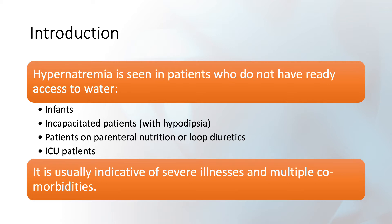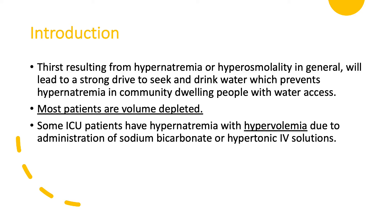Hypernatremia means that the person is probably incapacitated, that their thirst mechanism is not intact, that they cannot get up and drink. Thirst resulting from hypernatremia or hyperosmolality in general is a very powerful force. If you give someone with free access to water 3% saline and artificially raise their sodium, they're going to go and drink. This powerful drive prevents hypernatremia in community-dwelling people with access to water.